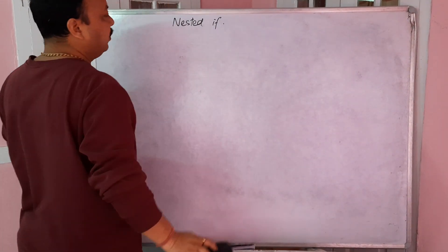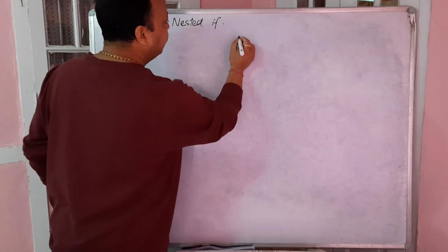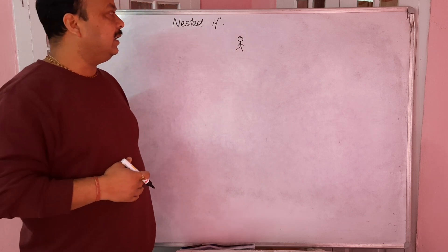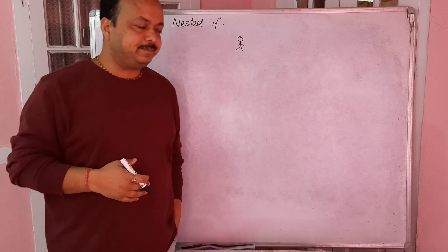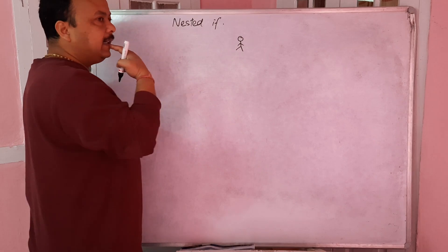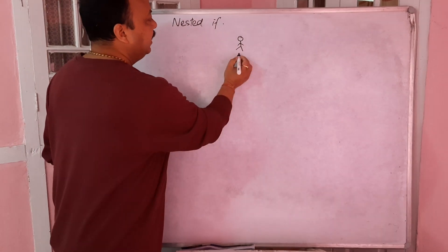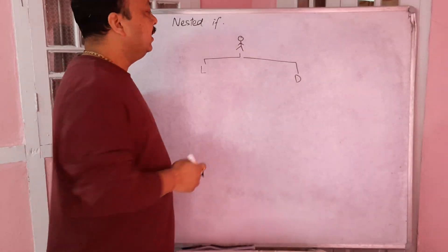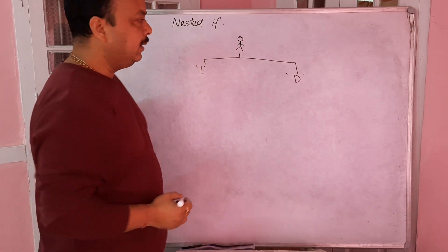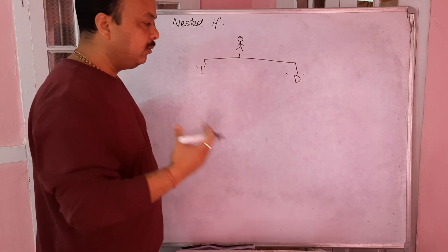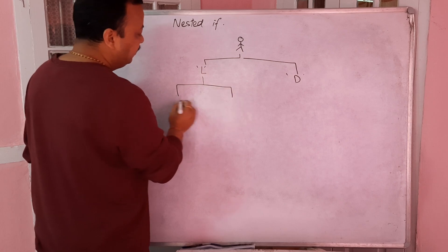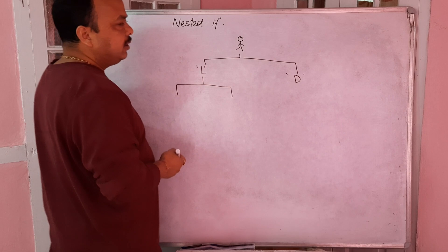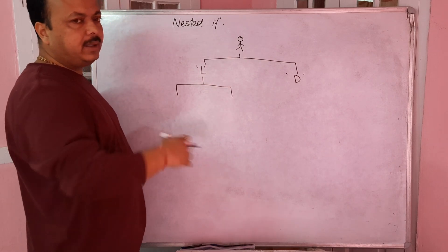Here's a situation: your parent decides to buy you a computer because you are doing well in programming. You go to the market and must decide: do you want a laptop or a desktop? If you decide on a laptop, the next question is about the budget your parent has allocated, because stores may have certain offers. On laptops there are usually fewer offers, while on desktops there are more.